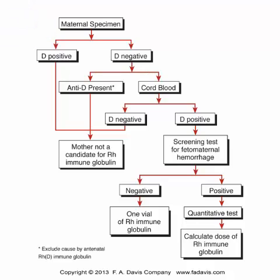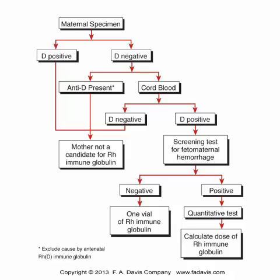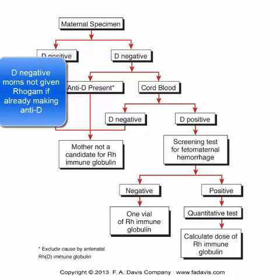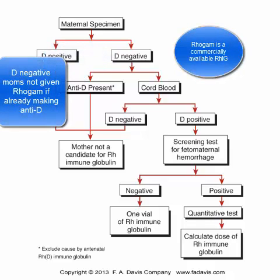We call it RH-positive or RH-negative. If the mother is D-positive, she is not a candidate for RhoGAM — she's not going to make anti-D because she has the D-antigen. If the mother is D-negative, we give her RhoGAM as long as she doesn't already have the anti-D antibody.